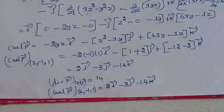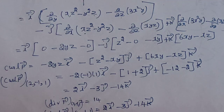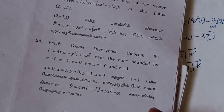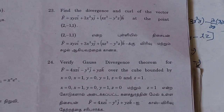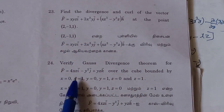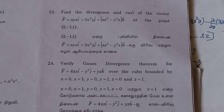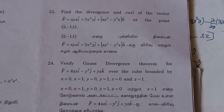So to summarize: for this question, divergence of F at the given point (2,-1,1) equals 14, and curl F equals 2i minus 3j minus 14k. For the Gauss Divergence Theorem question, check the link in the description for the November 2022 playlist.